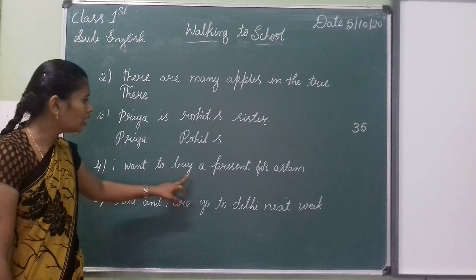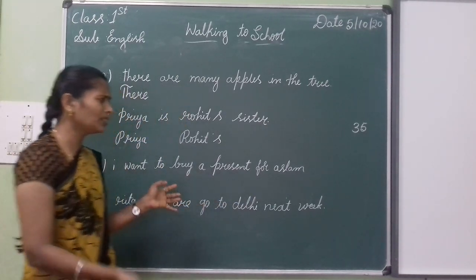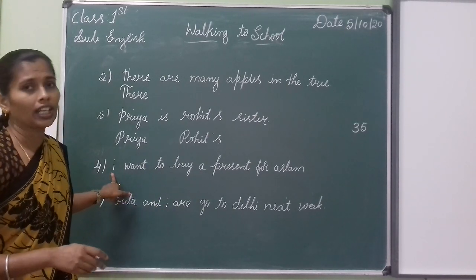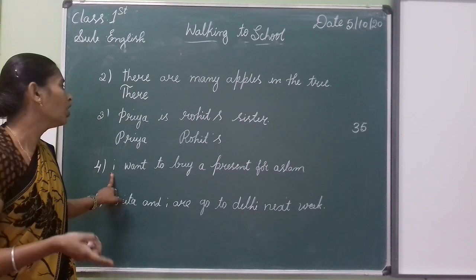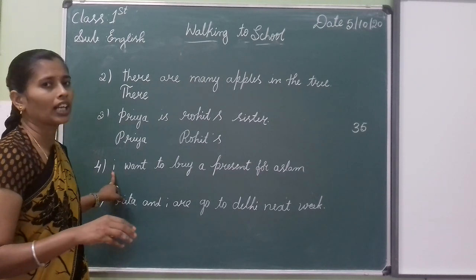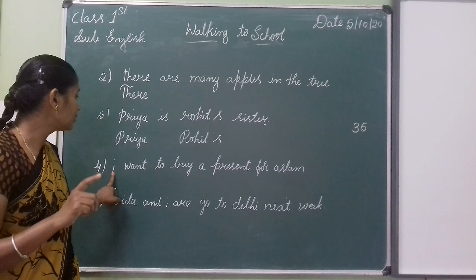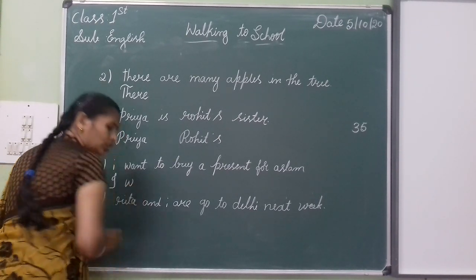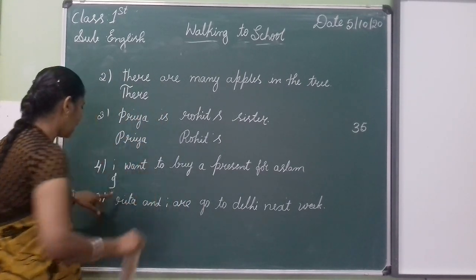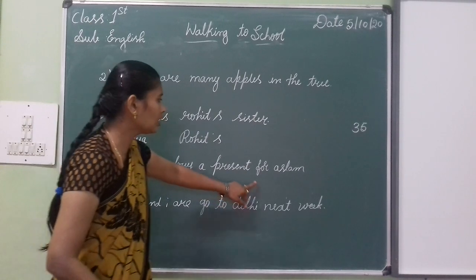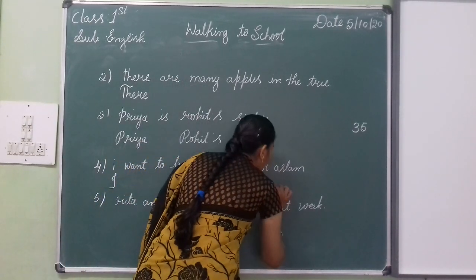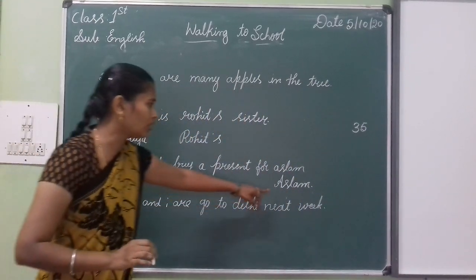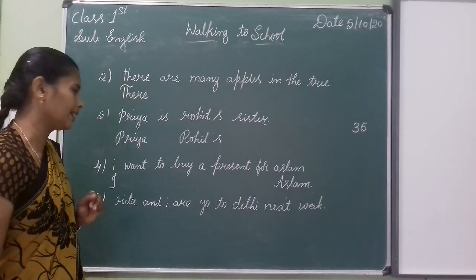I want to buy a present. Sometimes you have to write capital I. The word I — always write capital letter I. I want to buy a present. Here you have to write a capital letter A as well.